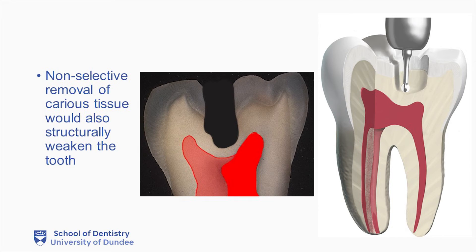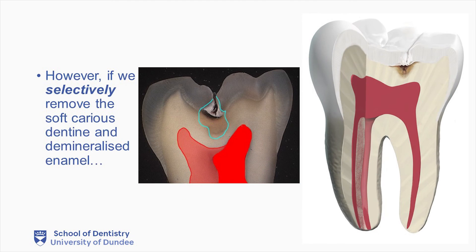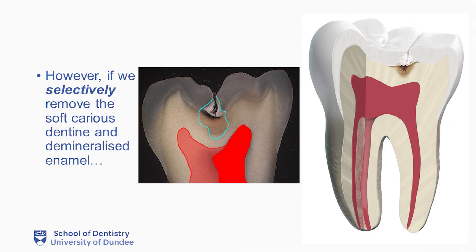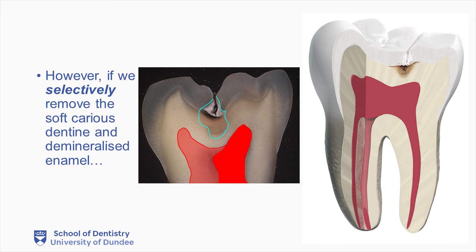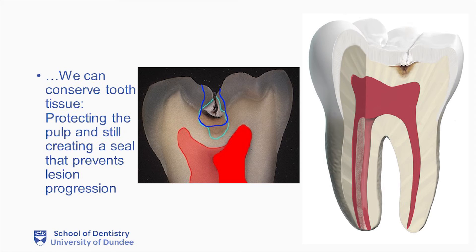Non-selective removal of caries tissue would also structurally weaken the tooth. However, if we selectively remove the soft caries dentine and demineralised enamel, but leave the tissue overlying the pulp, we can conserve the tooth tissue, protecting the pulp and still creating a seal that prevents lesion progression.